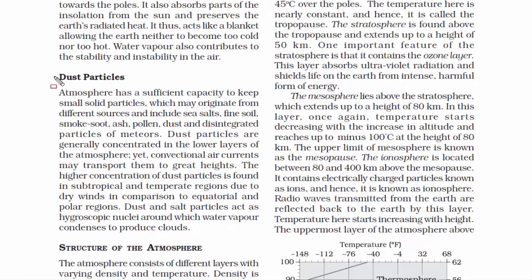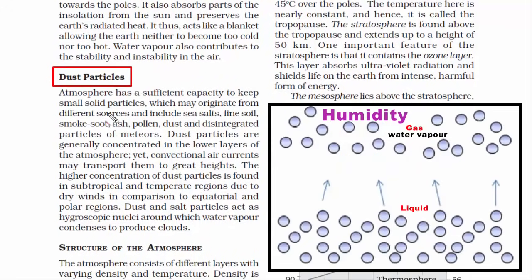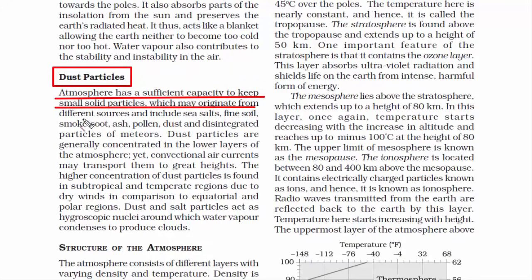Now let's talk about dust particles. So far we saw that there is tons of water vapor in the atmosphere. But I want you to know that atmosphere has a sufficient capacity to keep small solid particles. Now what are these particles? These are dust particles that originate from sea salts, fine soil, smoke from incomplete burning, ash pollen, dust and disintegrated particles of meteors.